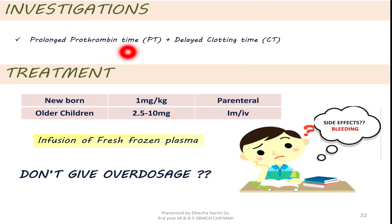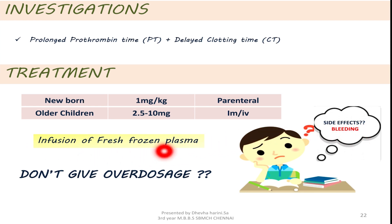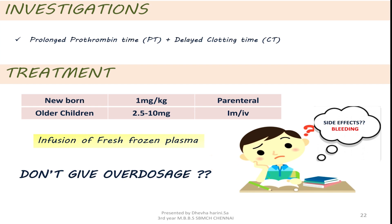Investigations: a prolonged prothrombin time and a delayed clotting time are seen. Treatment: vitamin K is given in newborns at about 1 mg per kg parenterally, and in older children about 2.5 to 10 mg intramuscularly or intravenously. Infusion of fresh frozen plasma is also given. In overdosage, a condition called hypervitaminosis K occurs, which will lead to breakdown of red blood cells and produce hemolytic anemia and jaundice, particularly seen in infants.